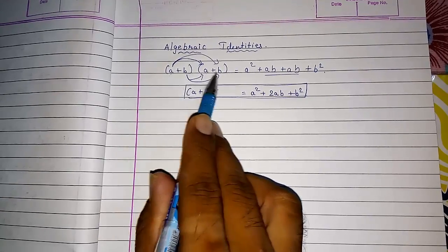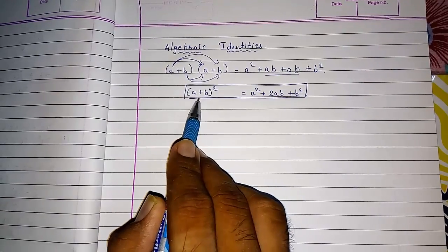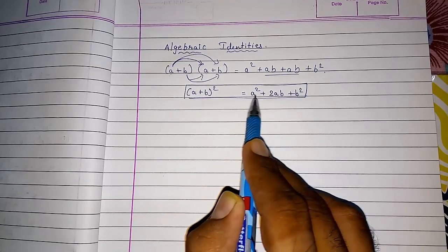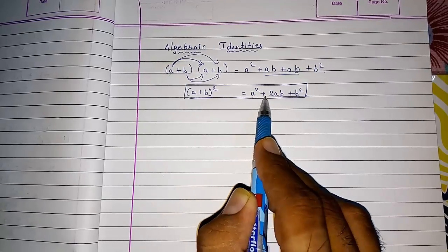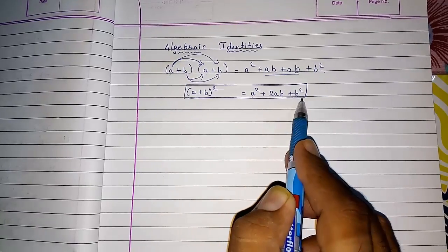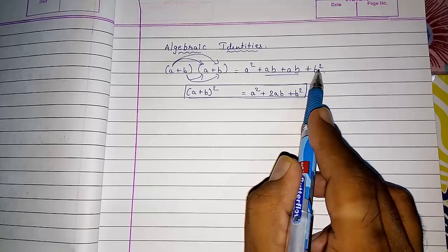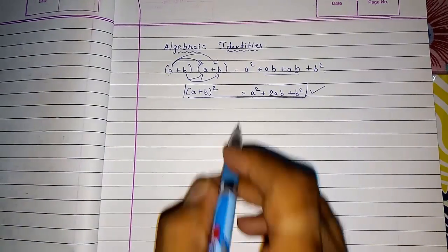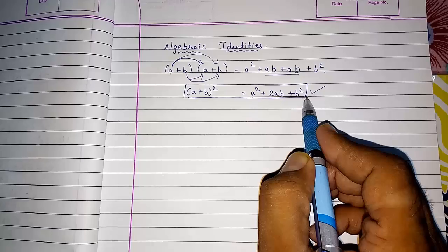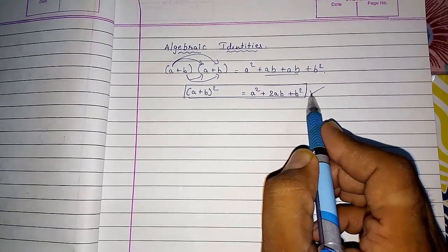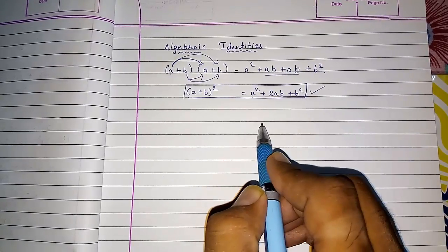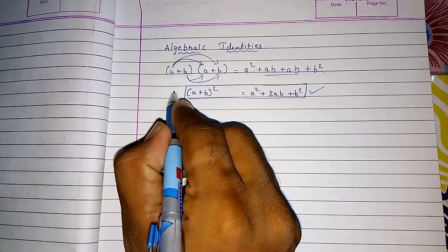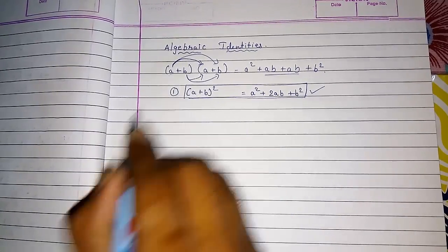Now if I am multiplying a polynomial with the same polynomial and a plus sign is there directly, I have to write A square plus 2AB plus B square. Instead of multiplying directly we can use this shortcut. These are all shortcuts that help us to solve directly. This is your algebraic identity number one.